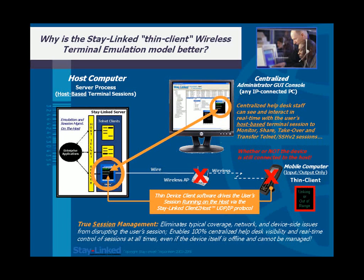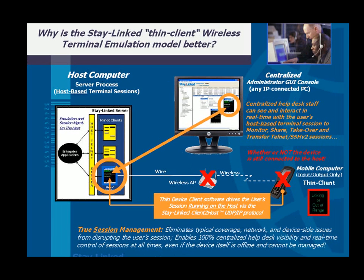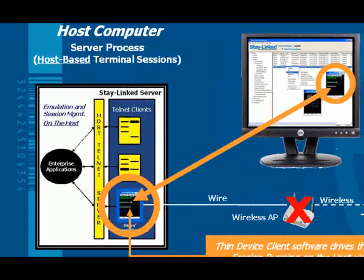This is when StayLink really shines. If there's a network interruption or the user simply wandered out of range, normal things that would take down a session or prevent the ability to help the user at all are not a challenge for StayLink, because as far as the Telnet server and Telnet client — or SSH server and SSH client — are concerned, they've never lost touch with each other. The device has merely temporarily been placed into a state where it cannot communicate with that host-based session.